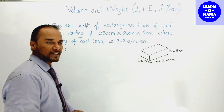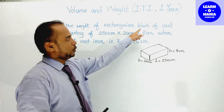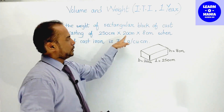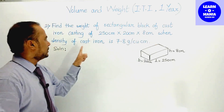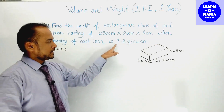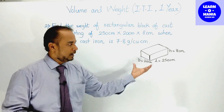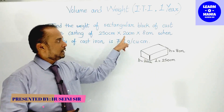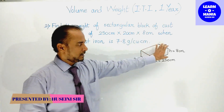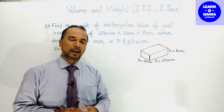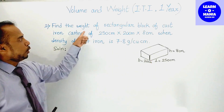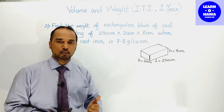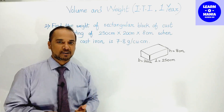Next sum: find the weight of rectangular block of cast iron of 250 cm × 20 cm × 8 cm, when density of cast iron is 7.8 gram per cubic cm। Cast iron block की length 250 cm, breadth 20 cm, और height 8 cm दी हुई है। हमें उस block का weight find करना है। Weight find करने के लिए सबसे पहले volume find करना पड़ेगा।